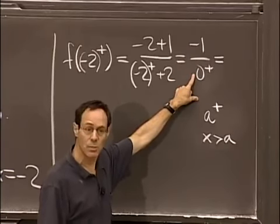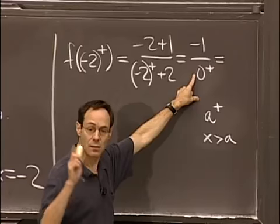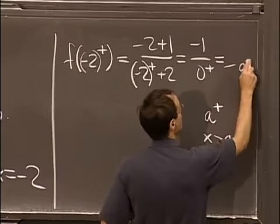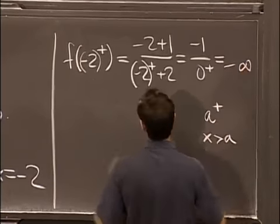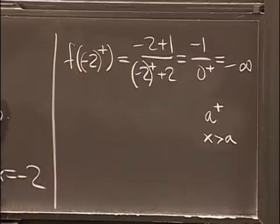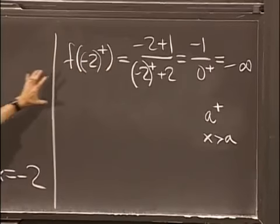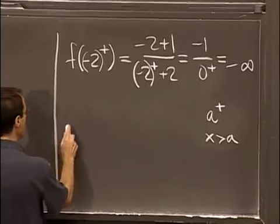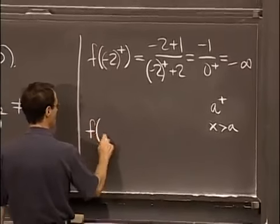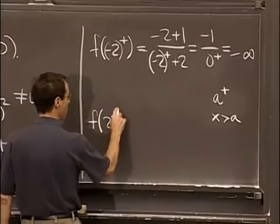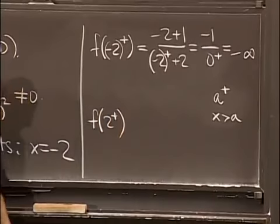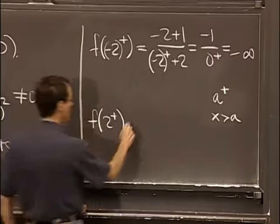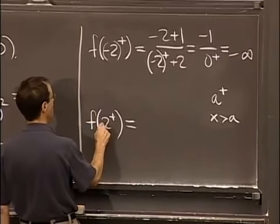[Student: Negative infinity.] OK, so we just evaluated this function from one side. And if you follow through the other side — from the left — you get something very similar, except now it's -1 divided by 0 minus, which gives plus infinity.